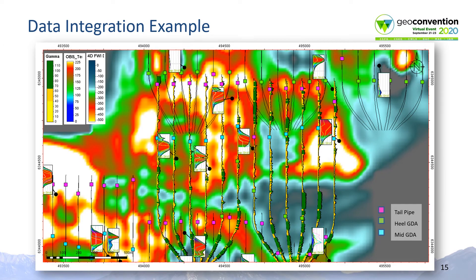Here is an example of the kinds of data integration that can be carried out using the FWI data. Observation well temperature logs, producer gamma ray logs, and several types of well interventions. The two types of well interventions shown here are tailpipes, which redirect the emulsion flow, and GDAs, which are steam injection locations. Analyzing these data with the reservoir and production engineering teams can provide insights for further production improvements.